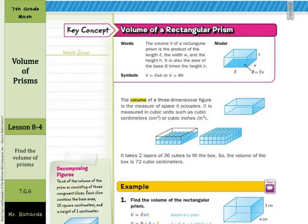So our first key concept is volume of a rectangular prism. The volume V of a rectangular prism is the product of the length L, the width W, and the height H. It is also the area of the base times the height.